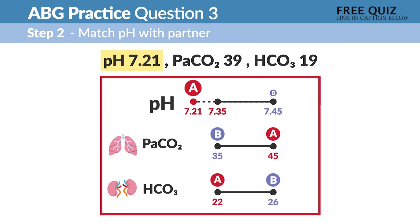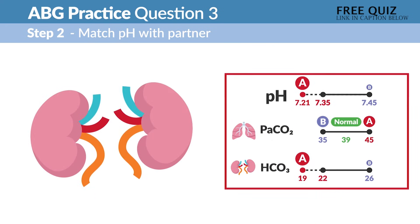Then in step two, we're going to find our acid match here. So CO2 is 39, that's in normal range, so there's no match. And HCO3 is 19 on that A side, so we have our acid match.